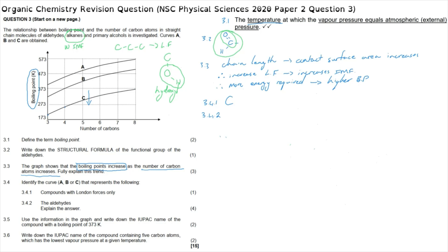Question 3.4.2 asks us to identify the curve that represents the aldehydes and explain that answer. The hydroxyl group in the alcohols gives them the strongest intermolecular forces, requiring the most energy and therefore the highest boiling point, so graph A represents the alcohols. Since graph C represents the alkanes, that leaves the middle curve — the ones that are neither the most polar like the alcohols nor the least polar like the alkanes — leaving the aldehydes as graph B. We need to start by identifying the intermolecular forces: aldehydes have dipole-dipole intermolecular forces due to the polar carbon-oxygen double bond.